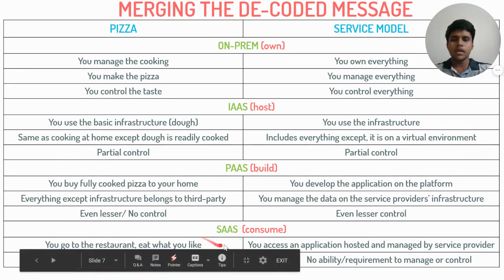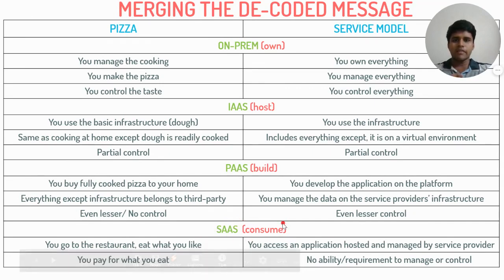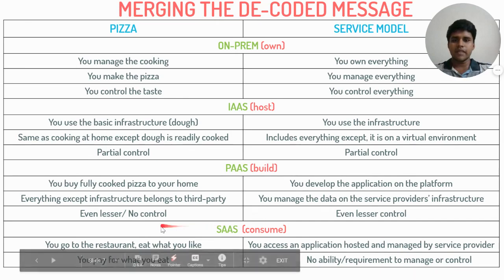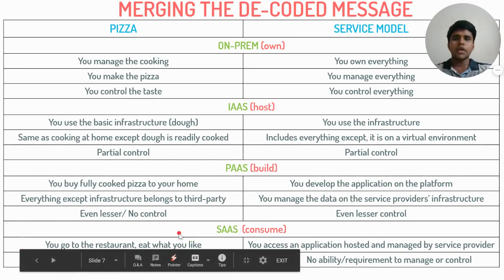With Software as a Service, we consume — there is very minimal, in fact zero, back-end activity at our end. We open the application using the internet, use it, and then close it. There is zero control with us and thereby immense cost savings. The corresponding pizza model? You guessed it — just going to a restaurant and having food there.